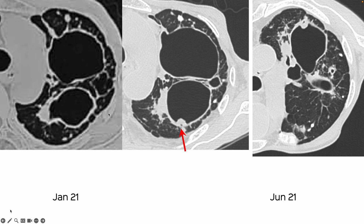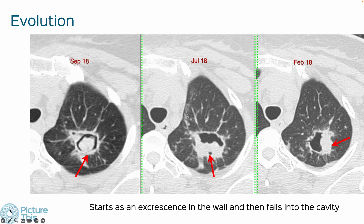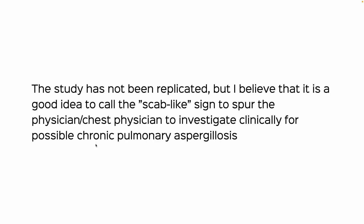We had a patient about four years ago where there was nothing in the cavities, then we picked up this mural nodule. More importantly, I had one patient followed over six or seven months where we found this scab-like lesion along the lateral wall — it then fell down almost like a water lily and detached itself into a classic fungal ball. If you saw only the September 18 scan, you would have called it exactly that. It's likely that it starts as an excrescence in many instances and falls into the cavity, but the study has not been replicated, so we should be a little careful about applying this as a broad stroke.